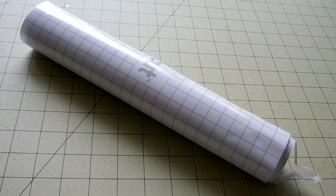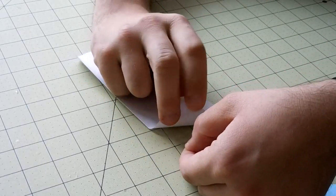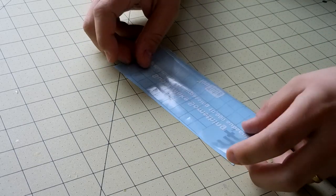The letters will be removed from the backing using transfer tape. After cutting a piece that matched the cutout of the letters, I peeled off the transfer tape's protective sheet, flattened it against the back of the vinyl, and squeezed out any excess air bubbles with my fingers.